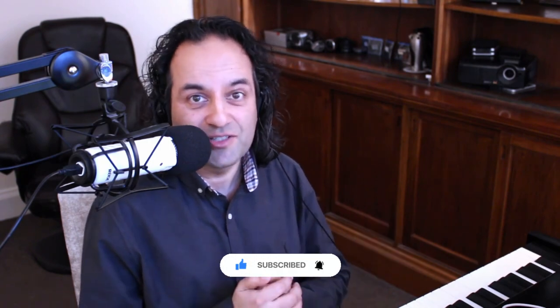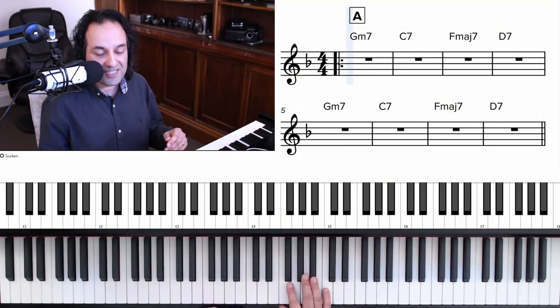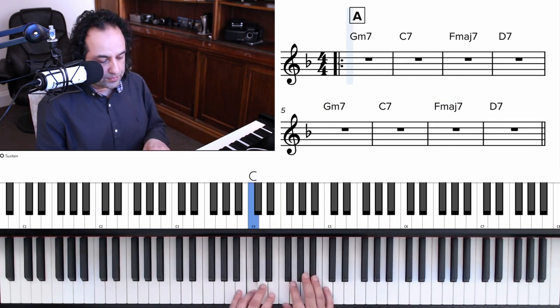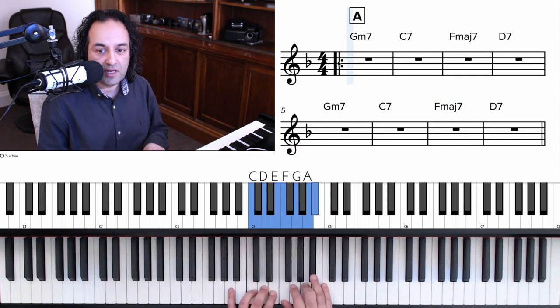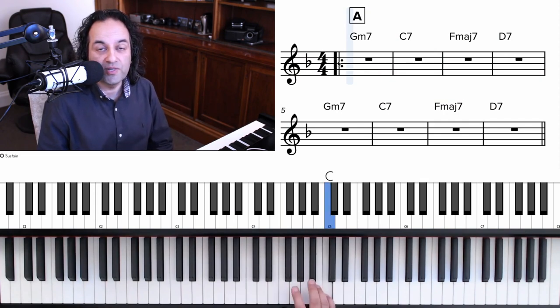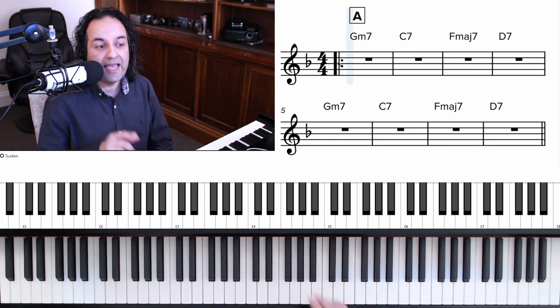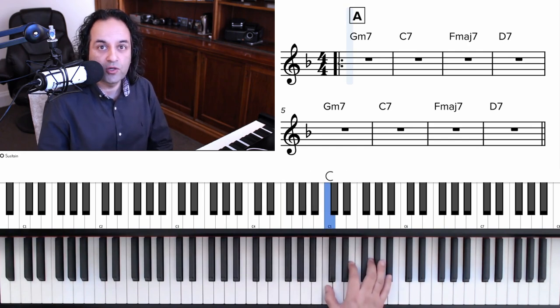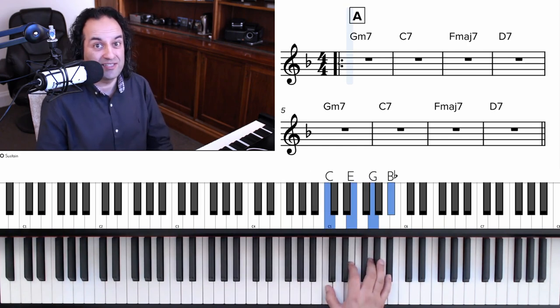I'm going to be using the C7 scale rules. So C7 scale, and when descending, we're going to add this extra note between root and seventh if descending from a chord note.